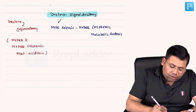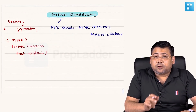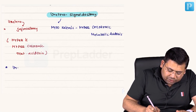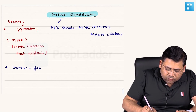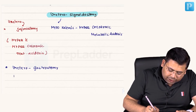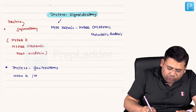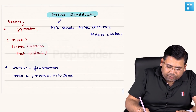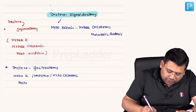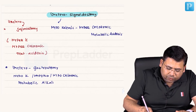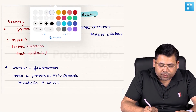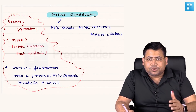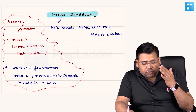One more ureteric diversion is uretrogastrostomy — also not associated with CA colon. In uretrogastrostomy, you see hypokalemic, hyponatremic, hypochloremic metabolic alkalosis. So the three types of enteric diversions are: ureterosigmoidostomy, ureterojejunostomy, and uretrogastrostomy.